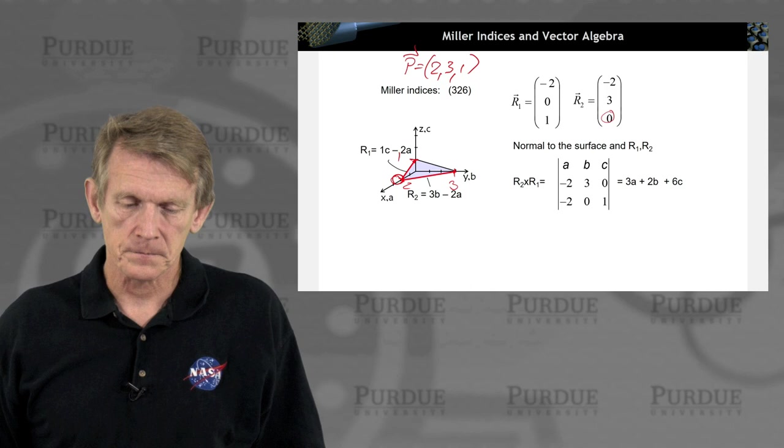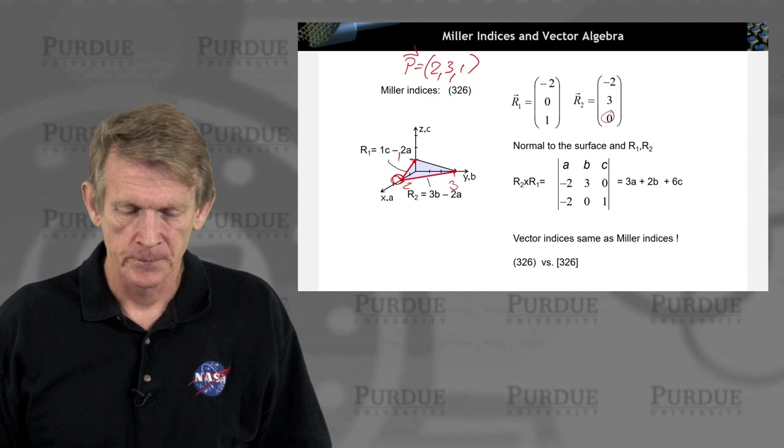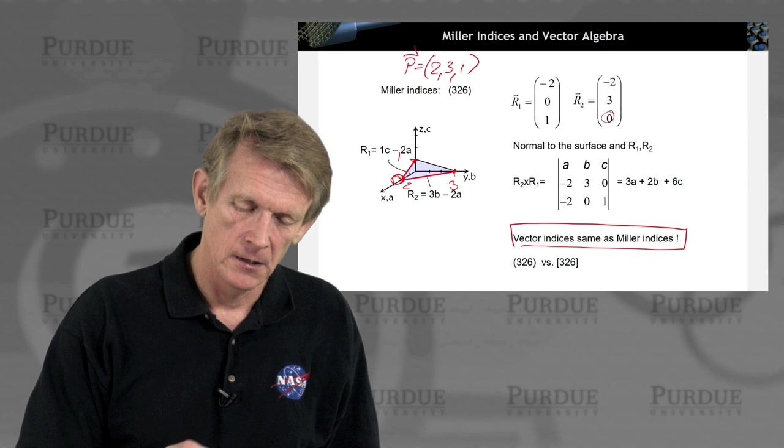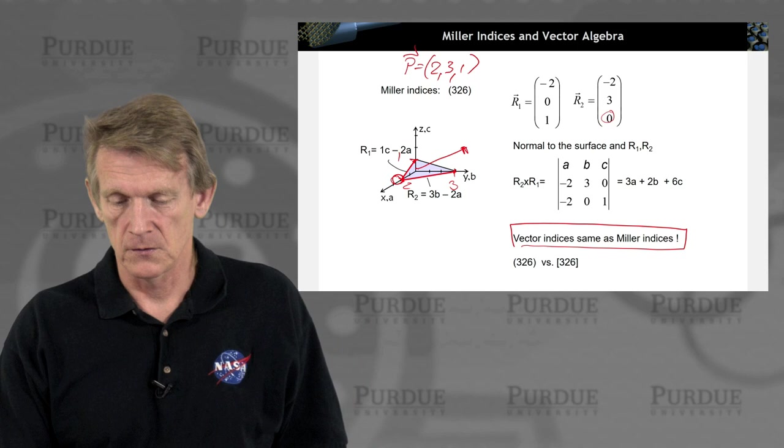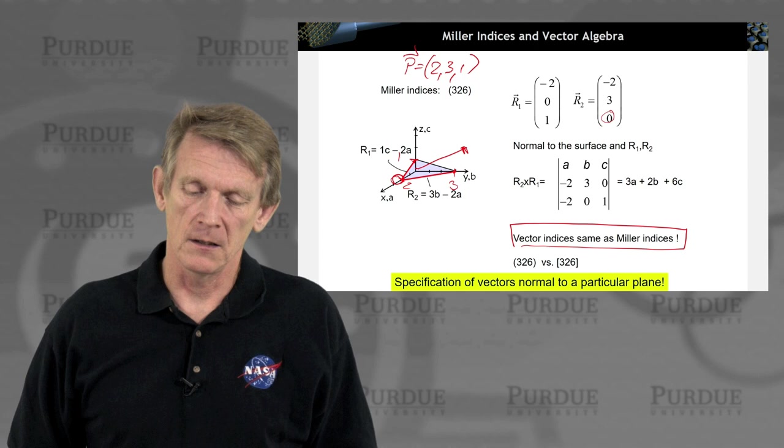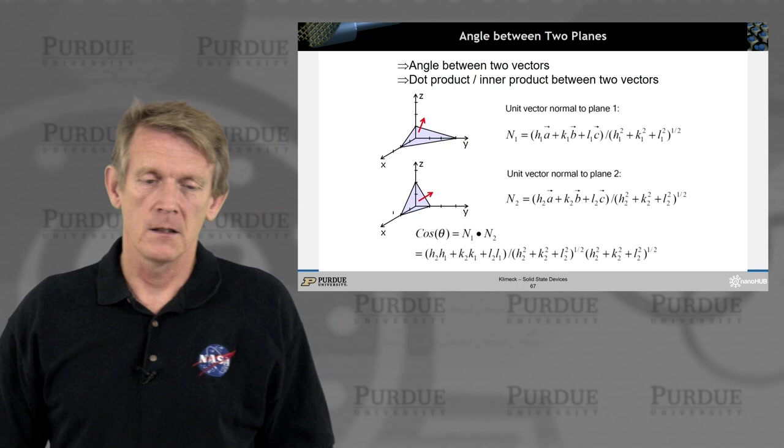Now let's build a cross product between these two vectors. And we get 3, 2, 6. And that gets us, the vector indices are the same as the Miller indices. And of course, the vector product gives us the vector that leads out of this surface. So the specification of the vectors normal to a particular plane are the Miller indices. That's the mathematical definition.